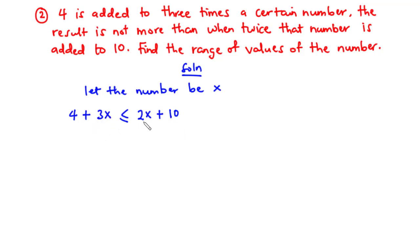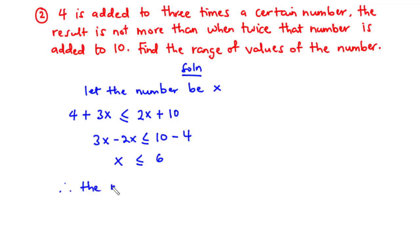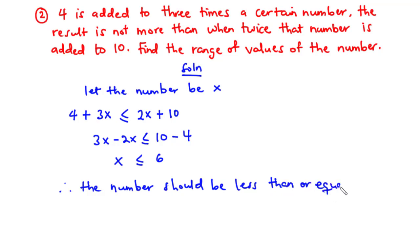Transposing 2x to the left-hand side, we have 3x minus 2x is less than or equal to 10 minus 4. This becomes x is less than or equal to 6. Therefore, the number should be less than or equal to 6.